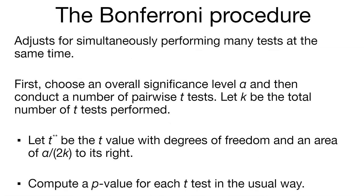Here's one example of a multiple comparison procedure: the Bonferroni procedure, named after statistician Bonferroni. This adjusts for simultaneously performing many tests at the same time. First, we choose an overall significance level for alpha, say 0.05, and then conduct a number of pairwise t-tests. We let k be the total number of t-tests being performed. Then t** is the t-value with the appropriate degrees of freedom and an area of alpha divided by 2k to its right, accounting for differences on both sides of the t distribution.